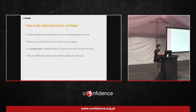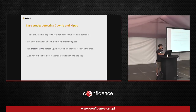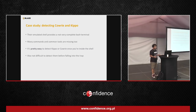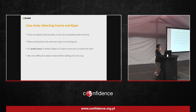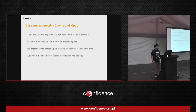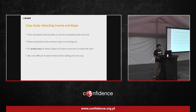Let's go to the case study. Kippo and Cowrie are the most popular SSH honeypots these days. The emulated shell doesn't really provide a very complete bash terminal, and many commands are missing. So once you're inside, it's pretty easy to detect.